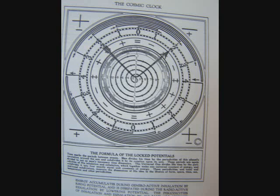The universal one divides his time by the periodicities of his inhalation and exhalation, which together make one universal constant of energy, and subdivides it into four exactly equal unit constants of energy. These periodicities and tonal and mid-tonal subdivisions measure the dimensions of his ideal in the illusion of form, space, time, sex, temperature, and other periodicities. Energy accumulates during generative inhalation by rising potentials and is dissipated during radioactive exhalation by lowering potential. The periodicities of inhalation and exhalation in all mass are absolute.